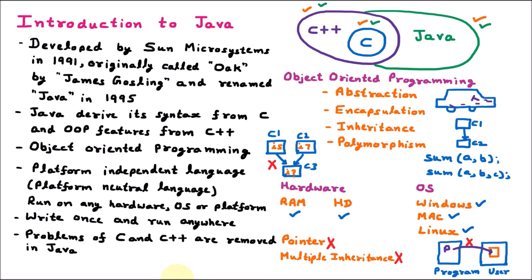In C and C++, we have the goto statement. When we use goto in a program, the program can jump anywhere — from there goto beginning, from there goto middle. It was very unreliable and very complex to read that program. The programmer cannot determine the flow of the program because it is jumping here and there, making the program unreliable and very difficult to debug. So because of that, the goto statement is removed from Java. In Java, we don't have goto. Goto is an unconditional jump, and unconditional jump is not available in Java.